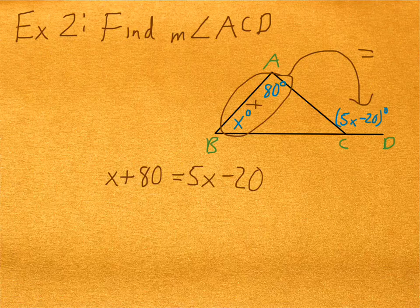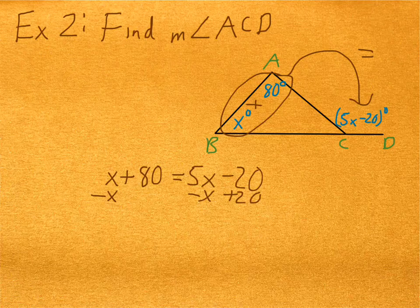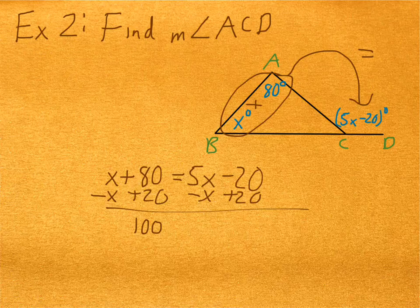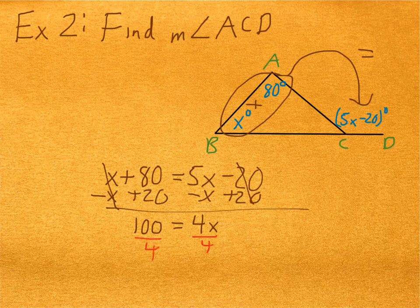If I subtract X from both sides, and I'll simultaneously add 20 to both sides, that would give me 100 on the left side and 4X on the right side. If I divide both sides by 4, I would now have a value for X of 25.